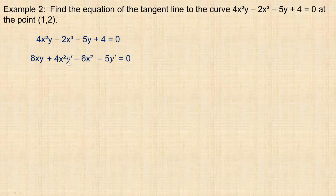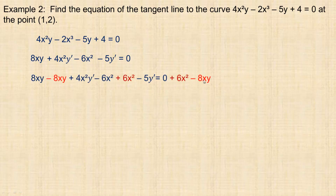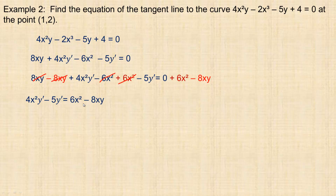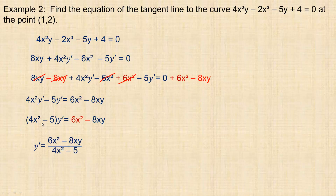I want to rearrange and get the terms with y primes alone on the left, and 8xy minus 6x squared on the right. I subtract 8xy from both sides and add 6x squared to both sides. Those terms cancel out, leaving the y prime terms on the left and 6x squared minus 8xy on the right. I factor y prime out, giving y prime times (4x squared minus 5) equals 6x squared minus 8xy. Dividing both sides by (4x squared minus 5), y prime equals (6x squared minus 8xy) over (4x squared minus 5).